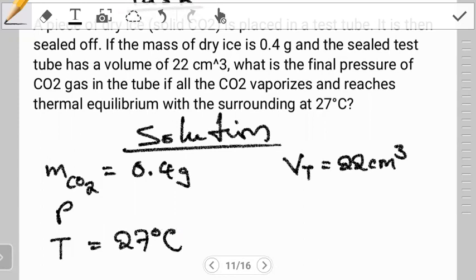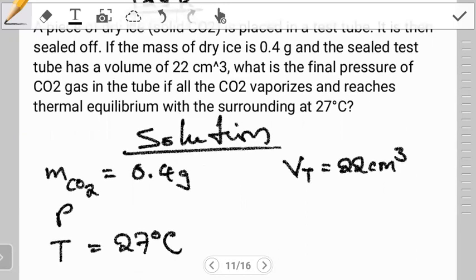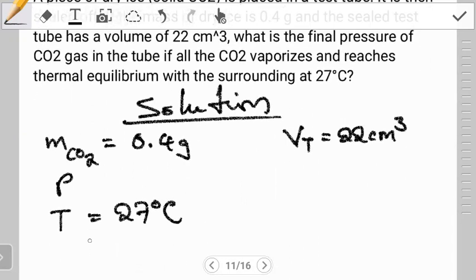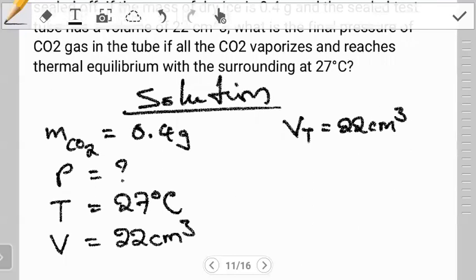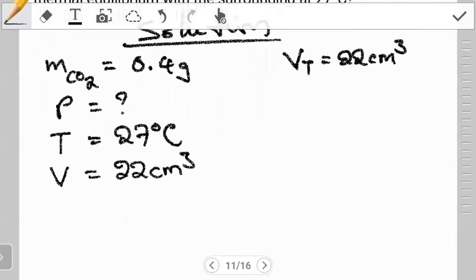Now remember what we started with was dry ice which is solid carbon dioxide, but it all becomes a gas. Since it becomes a gas, it means that the volume that it will occupy will be equivalent to the volume of the container. The volume of the carbon dioxide when it is a gas will also be 22 cm³, which is just the volume of the test tube. We want to find the pressure when it is a gas occupying this volume. We have the temperature, we have the volume when it is a gas, we want to find the pressure. The relationship here is the ideal gas equation.